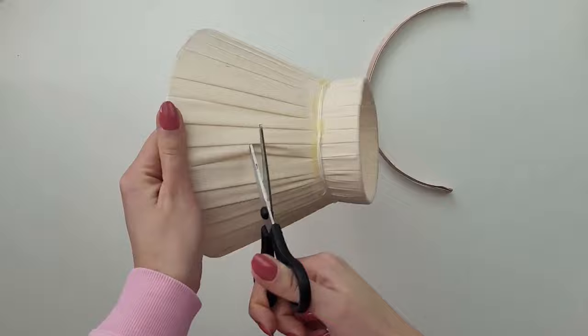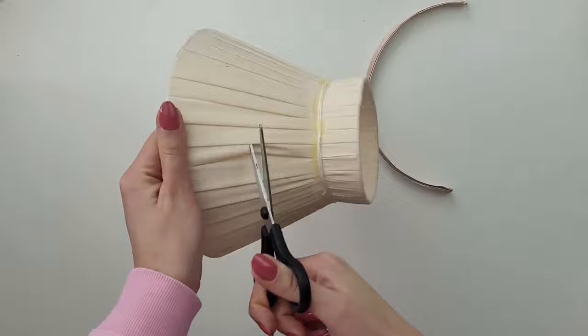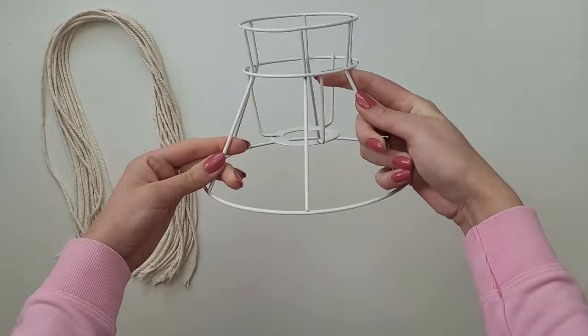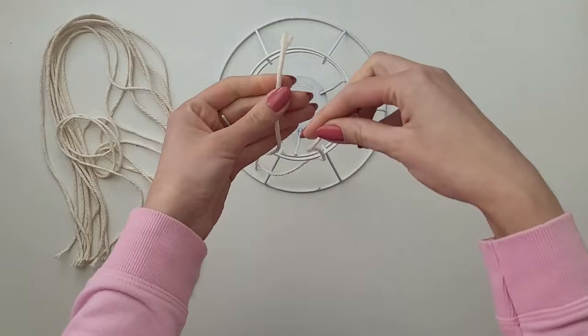For my next project I will change the look of the lampshade which goes with the basic IKEA black table lamp. I start with removing the old fabric and clean it. This lampshade consists of two parts.